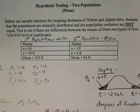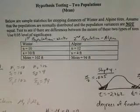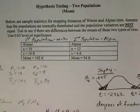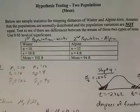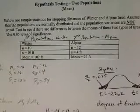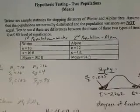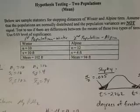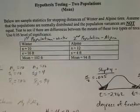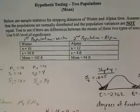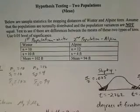This is a hypothesis test about two populations for the mean. The question says below are sample statistics for stopping distances of winter and alpine tires. Assume that the populations are normally distributed and the population variances are not equal. Test to see if there are differences between the means of these two types of tires using a 0.05 level of significance.